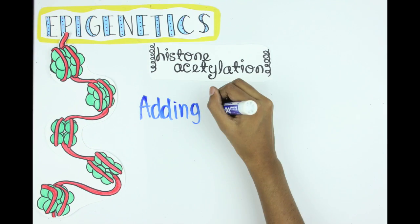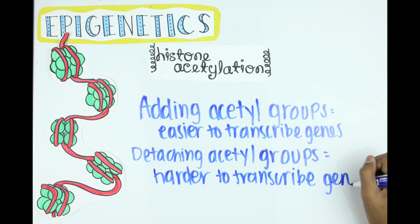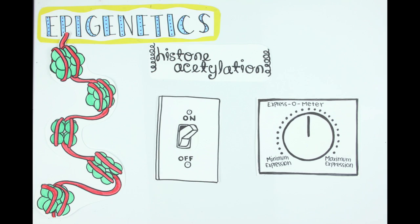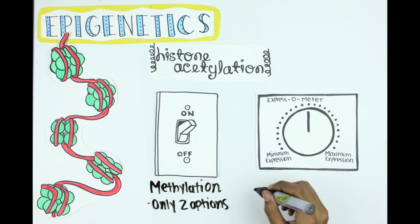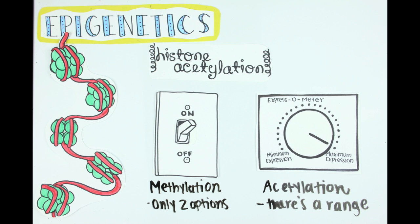Adding these molecules changes the histone structure and loosens out the DNA wound around them, so RNA polymerase can easily transcribe genes. While removing them tightens the DNA, making it harder for RNA polymerase to transcribe genes. Unlike methylation, which determines if genes are either expressed or not, acetylation can determine the extent to which a gene is expressed. There's a range, like turning a knob. You can have a lot of gene expression creating more proteins, or a little expression creating fewer proteins.